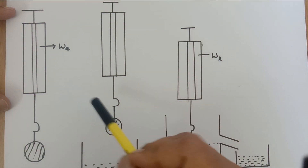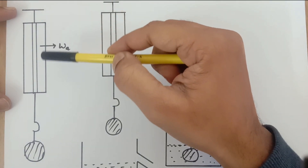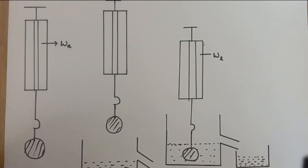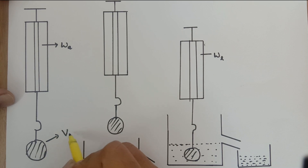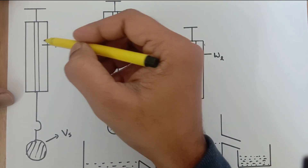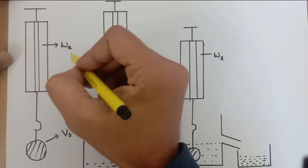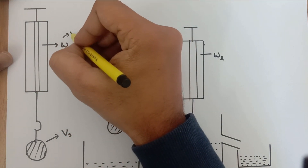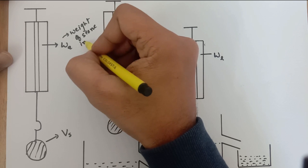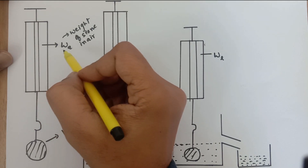Hello everyone, in this video lecture we are going to understand the Archimedes principle. We have a spring balance with a stone hanging from it. The volume of this stone is let's say Vs. Since we are measuring the weight of this stone in air, the surrounding medium is air, and the weight displayed is Wa — the weight of the stone in air.